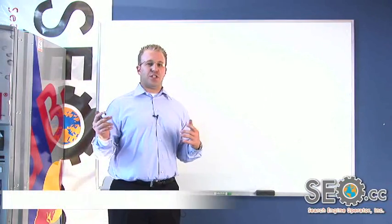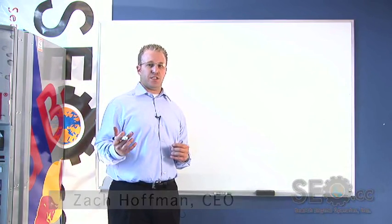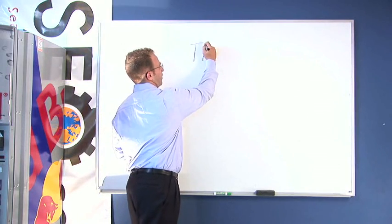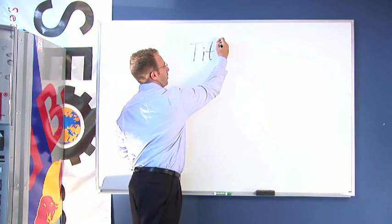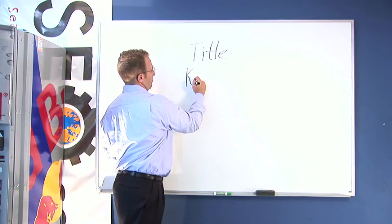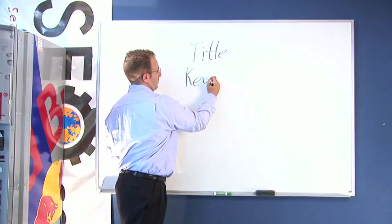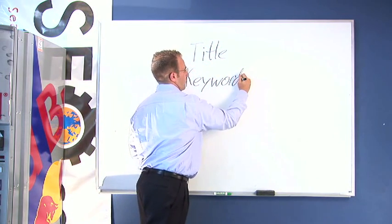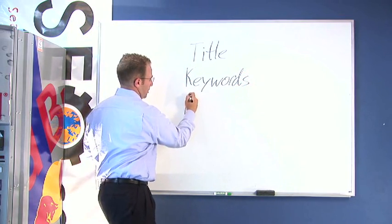Now, for organic search engine optimization, we're going to cover meta tag authoring. For meta tag authoring, you're going to have three major sections: your title, your keyword, and your description.